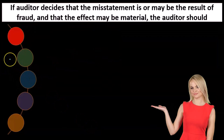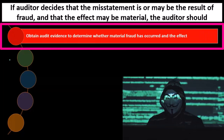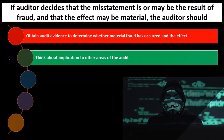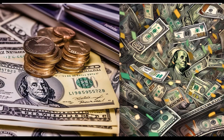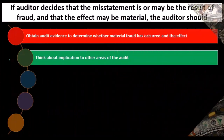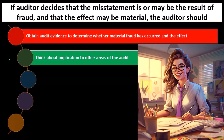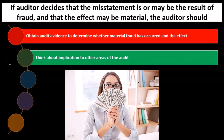If the auditor decides that the misstatement is or may be the result of fraud and the effect may be material, the auditor should obtain audit evidence to determine whether material fraud has occurred. Our focus here is really on the financial statements — it's on the nature of the fraud and what effect it will have on the financial statements — because our goal is to make an opinion on the financial statements and their reporting, not necessarily to pursue it as a criminal or forensic matter.